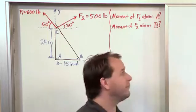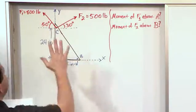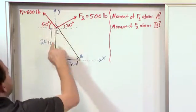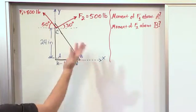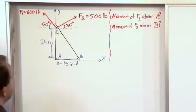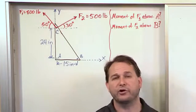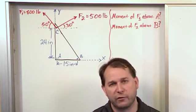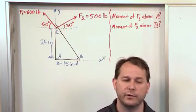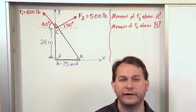Also, since this is a two-dimensional problem, all of the forces are in the XY plane. All of the moment arms—the R vectors—are also in the XY plane. So when you take a cross product of two vectors, R cross F, the moment or cross product is always perpendicular to the plane containing the two vectors you're crossing.